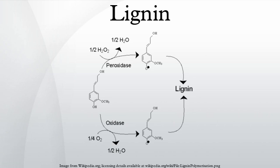The composition of lignin varies from species to species. An example of composition from an aspen sample is 63.4% carbon, 5.9% hydrogen, 0.7% ash, and 30% oxygen. As a biopolymer, lignin is unusual because of its heterogeneity and lack of a defined primary structure. Its most commonly noted function is the support through strengthening of wooden trees.